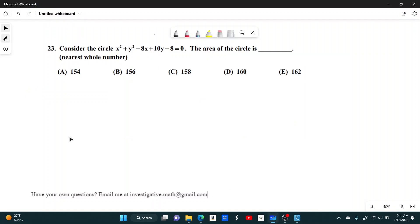Number 23. Consider the circle x squared plus y squared minus 8x plus 10y minus 8 equals 0. The area of the circle is what? To the nearest whole number.